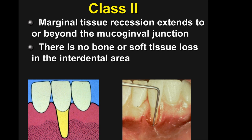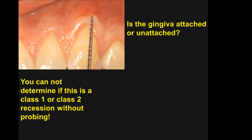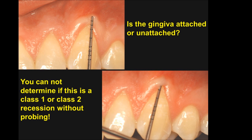Here we see diagrammatically an article from the International Journal showing no keratinized tissue on the facial. The key question is: is the gingiva on the facial attached or unattached? Just looking based on 1985 understanding, this would be classified as Class I. However, once we probe the area, we can see the probe goes beyond the mucogingival junction — therefore this is a Class II recession, even though there is keratinized tissue on the facial. The key is whether it is attached or unattached.